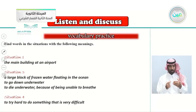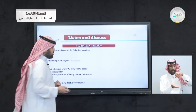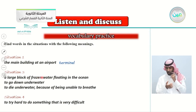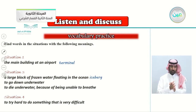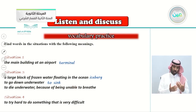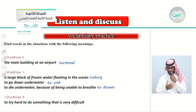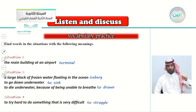Continuing with vocabulary practice — find words in the situations with the following meanings. In situation one: the main building at an airport — we call it a terminal. In situation three: a large block of frozen water floating in the ocean — an iceberg. To go down under water — to sink. To die underwater because of being unable to breathe — drowning. In situation four: to try hard to do something that is very difficult — we call it to struggle.